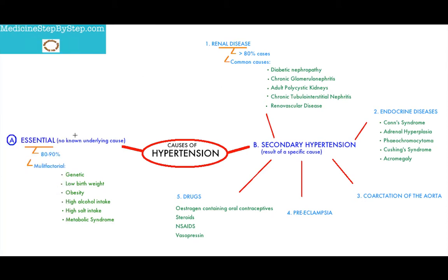Essential hypertension, also known as primary hypertension, has no known underlying cause. It accounts for the majority of hypertension, in the region of about 80-90% of patients. It has a multifactorial etiology that consists of genetic factors, being of a low birth weight, obesity, having a high alcohol intake, having a high salt intake, and metabolic syndrome.